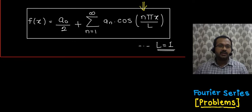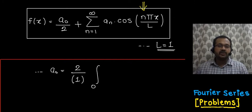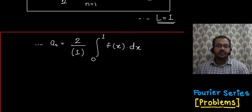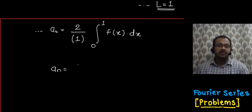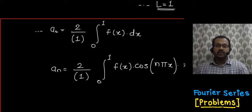The important part is evaluating the Fourier coefficients. Since the function is even, a₀ = (2/l) times the integral from 0 to l of f(x) dx. Similarly, aₙ = (2/l) times the integral from 0 to l of f(x) cos(nπx / l) dx. Since l = 1, we get the same expressions, and we integrate with respect to x.